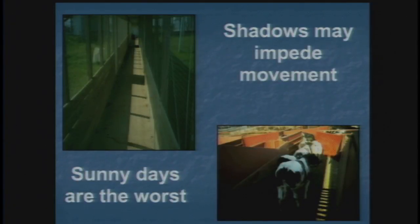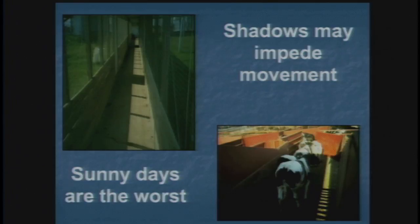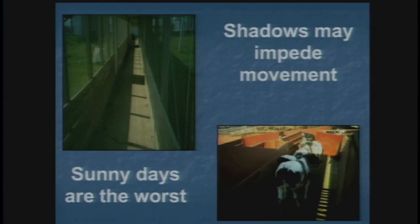On a sunny day you're going to get shadows and bright spots. I want you watching constantly for these different things in lighting, because I have found in the big meat plants I could fix most of them by doing very simple changes in lighting — adding a light on a dark chute, moving a light to get rid of a reflection, putting up a piece of cardboard so they didn't see people up ahead.